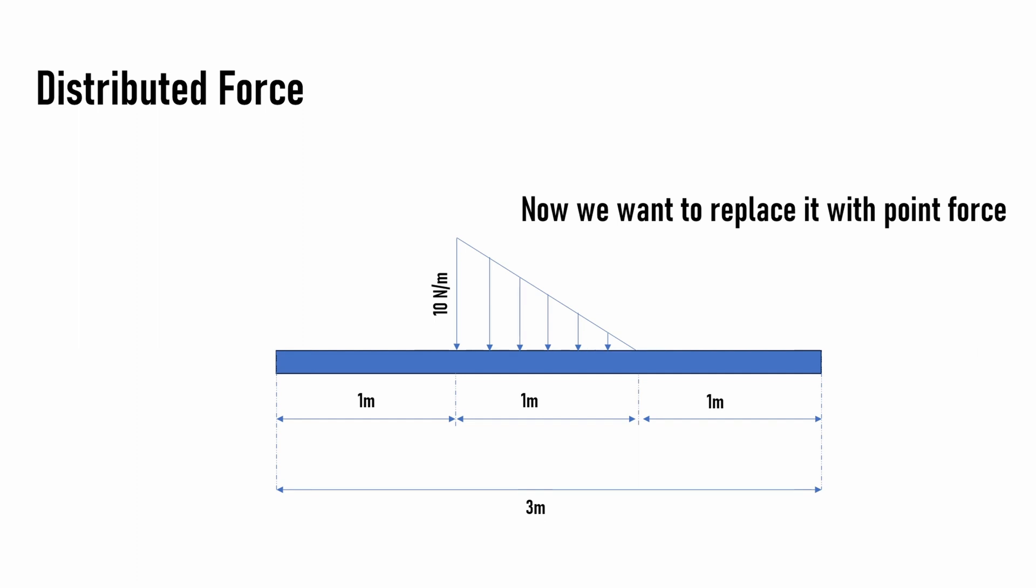For example, we have a beam-like structure with a 3 meter length and a force acting on it, which is a distributed force. The maximum peak of this force is 10 Newton per meter and it reduces over the length. We want to find the equivalent point load which will act on a certain position without impacting the overall case scenario. In order to do that, we need to find the area of the triangle created by that force.